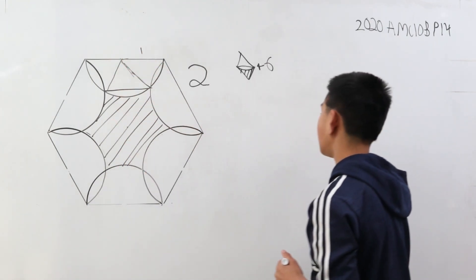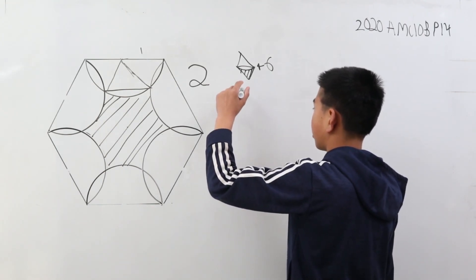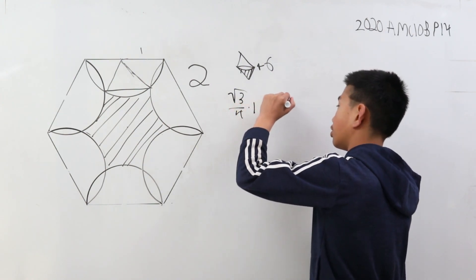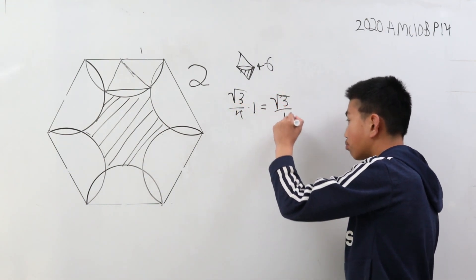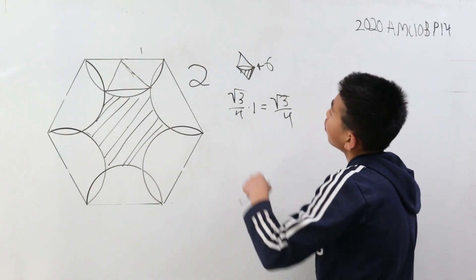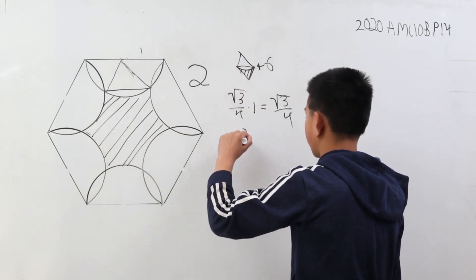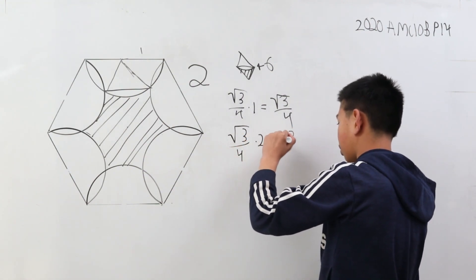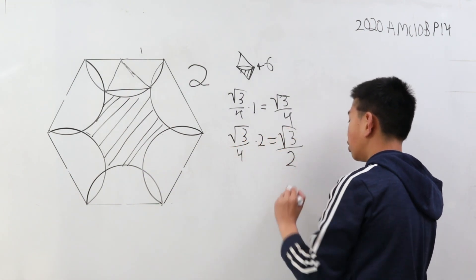The side length is one, so the area of one triangle is going to be square root three over four times one, which is square root three over four. The total area is going to be two of those, so square root three over four times two is square root three over two.